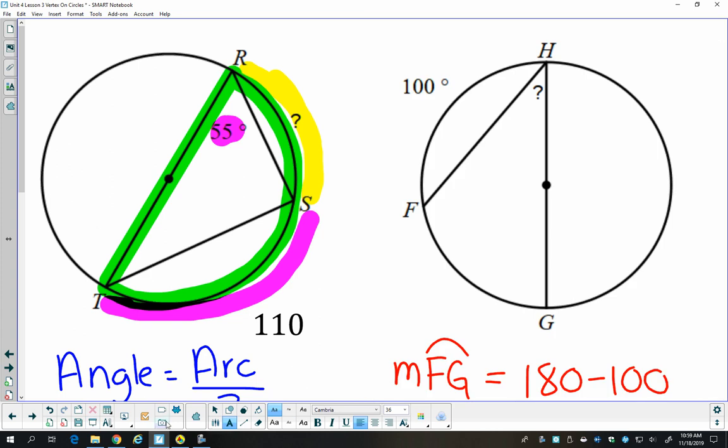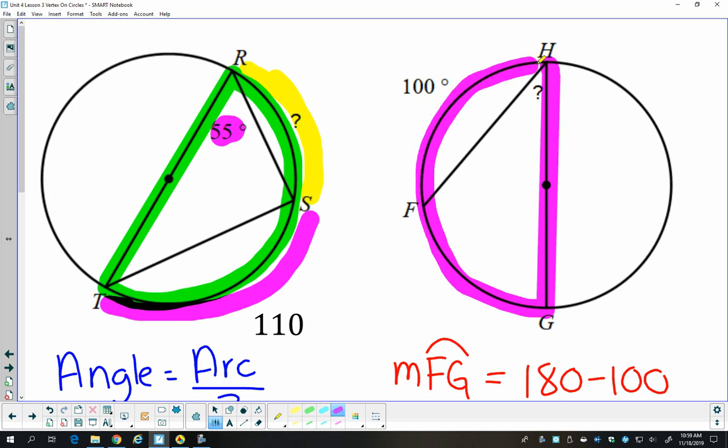I'll do another one. Again, I have a diameter, which makes this a semicircle of 180 degrees. I know one piece of the semicircle. And I want to know this inscribed angle. That inscribed angle is related to this piece of the semicircle, arc FG.